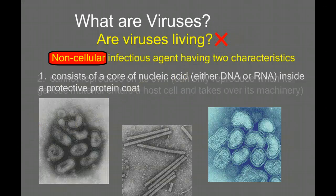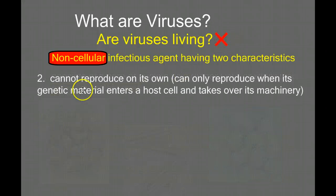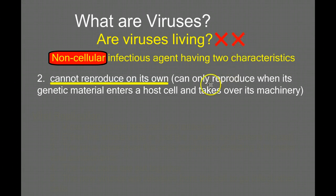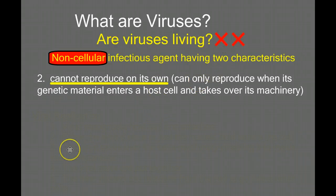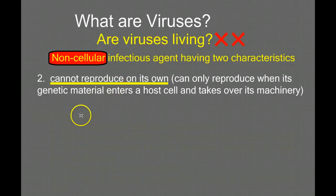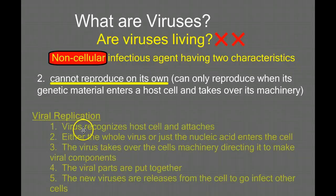When we look at the second characteristic of viruses, we see our second big strike: they cannot reproduce on their own. Two strikes is enough, and so for our specific definition of living things, viruses are not considered living. So instead of saying viral reproduction, we're going to talk about viral replication.